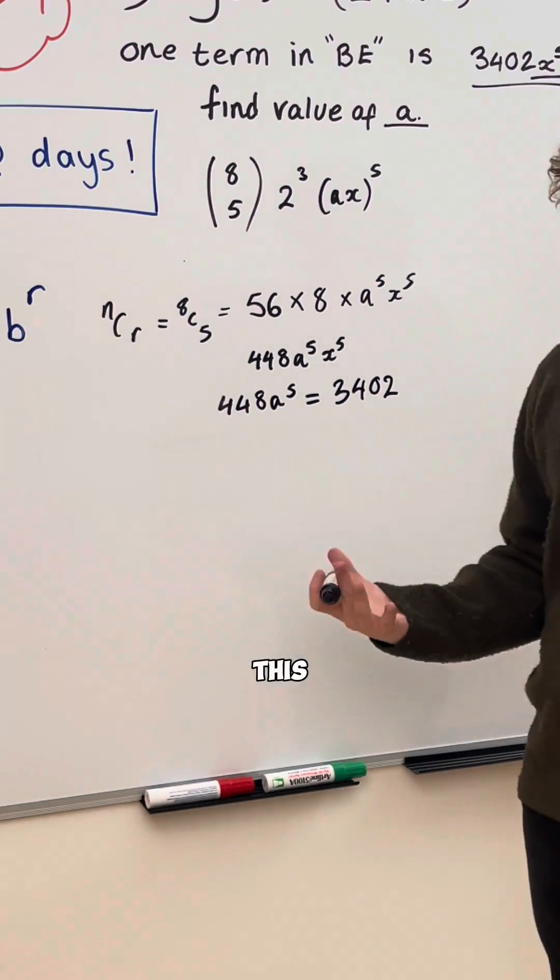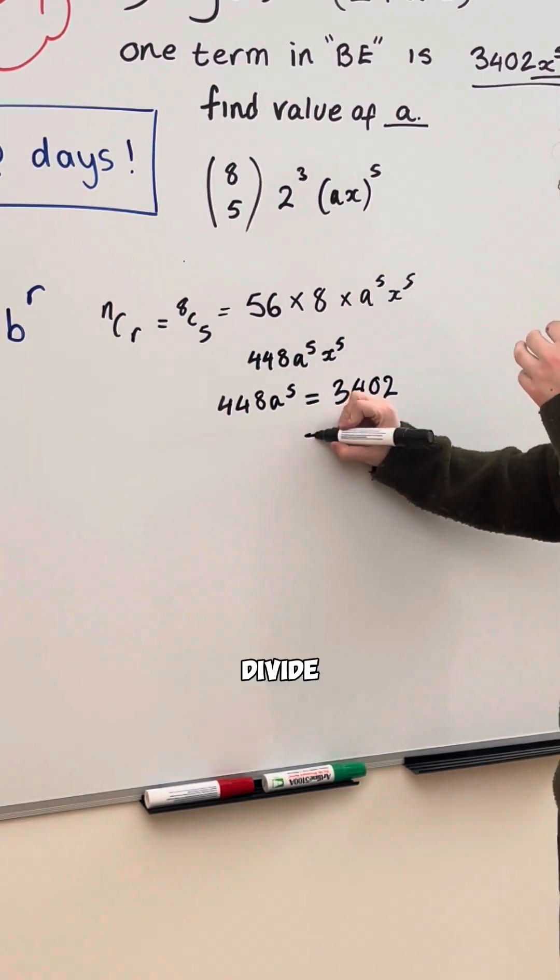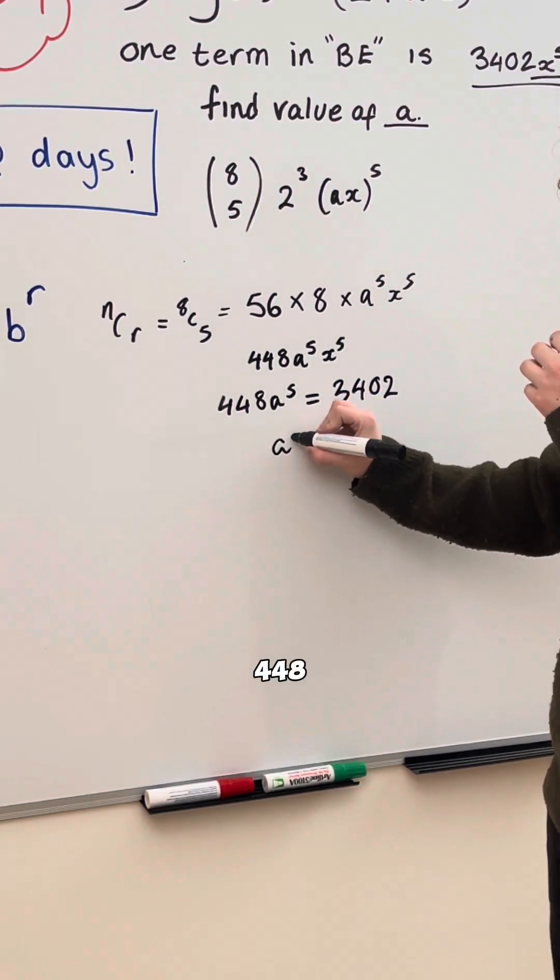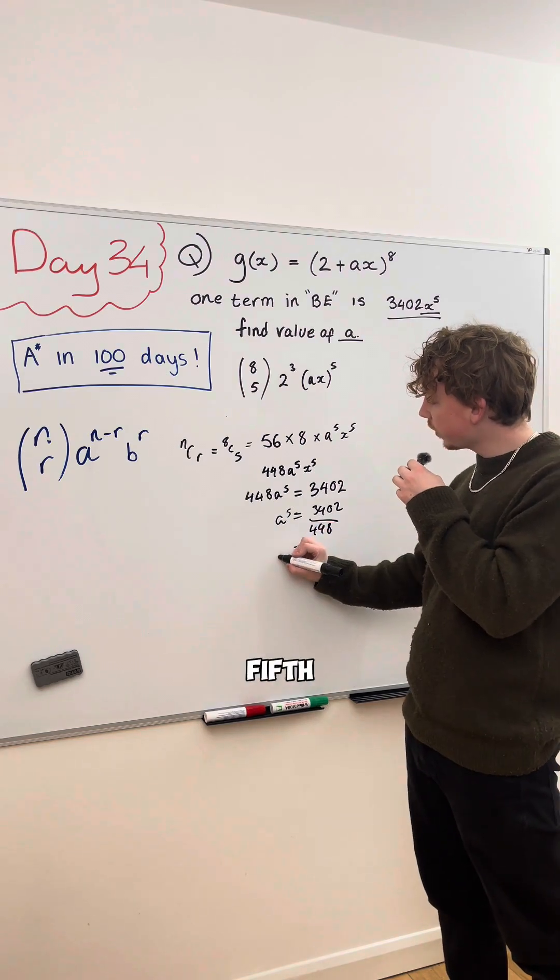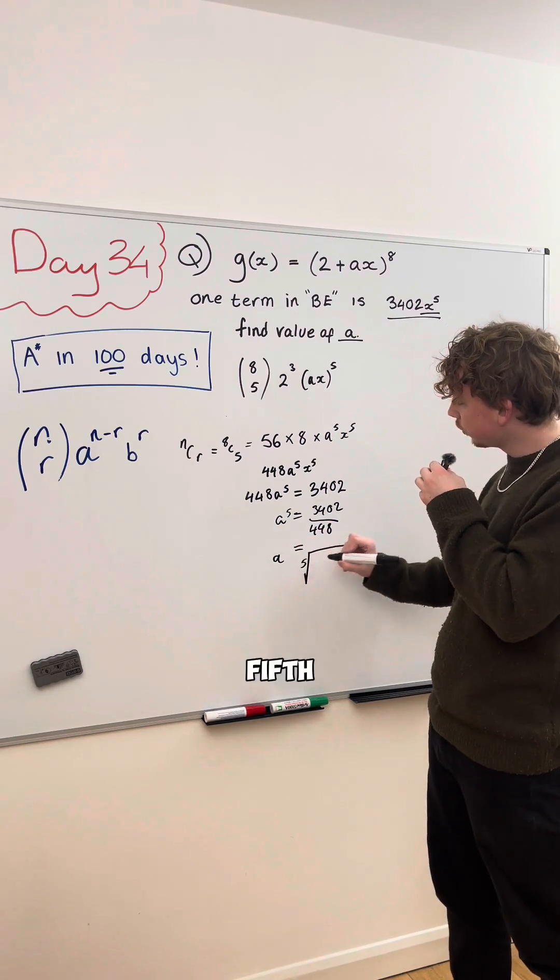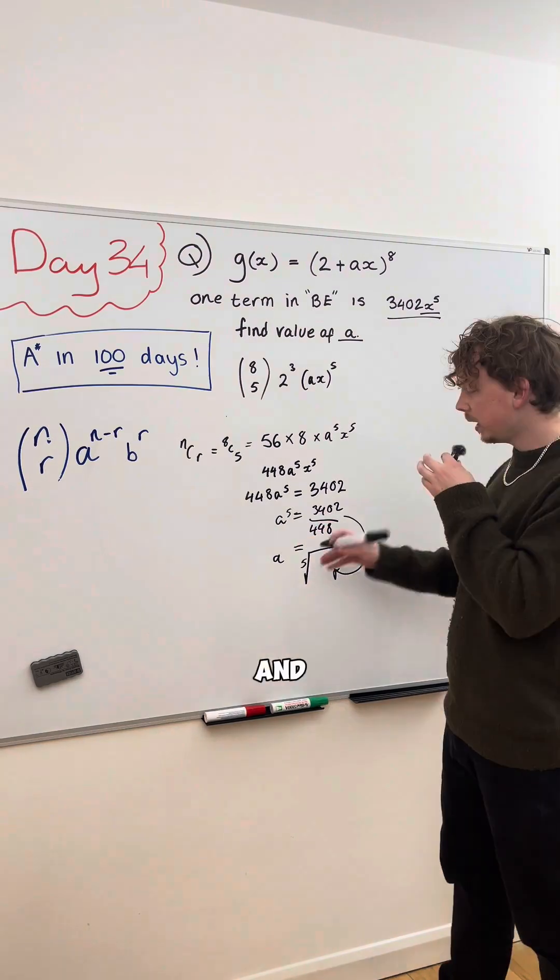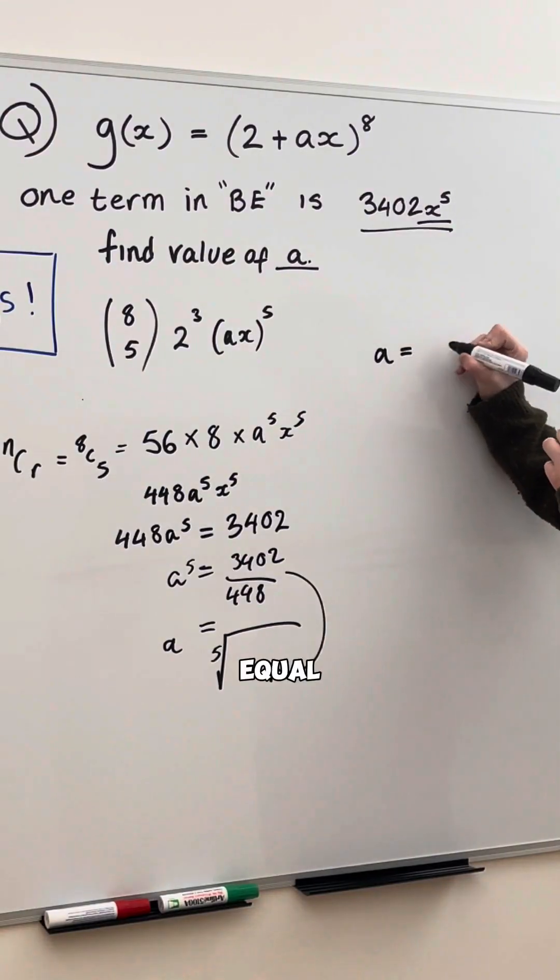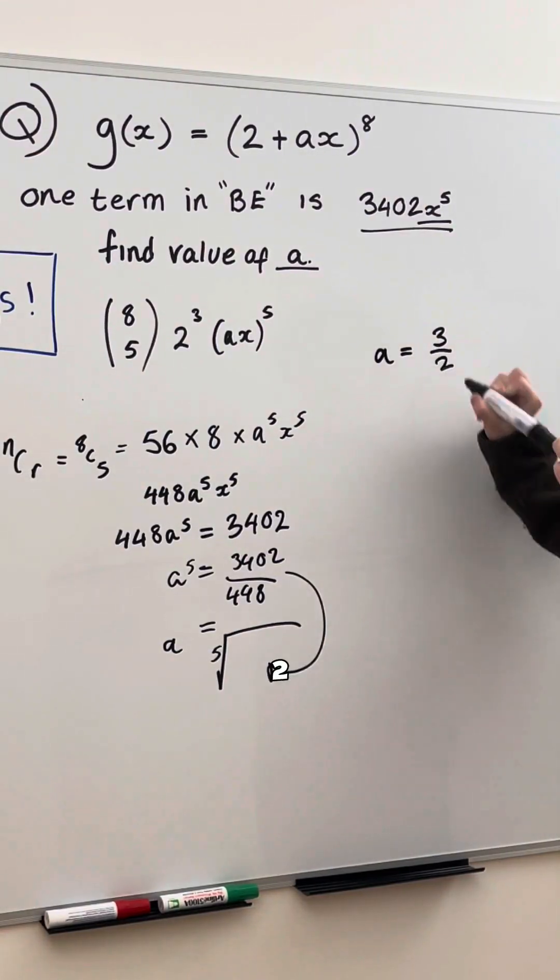Now, we can rearrange this to figure out what A is, divide both sides by 448, and we can do this to the fifth root. So, A fifth root, or whatever this is, and that gives us that A is equal to 3 over 2.